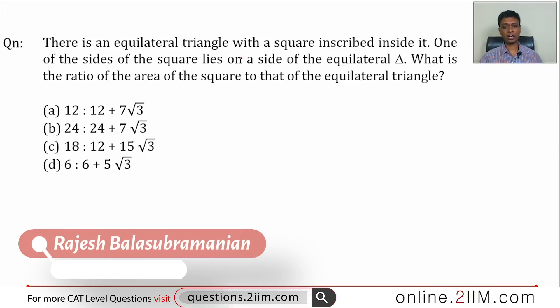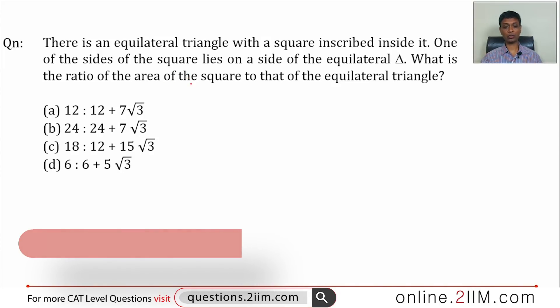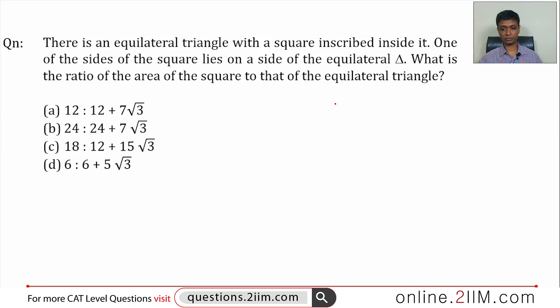There is an equilateral triangle with a square inscribed inside it. One of the sides of the square lies on a side of the equilateral triangle. What is the ratio of the area of the square to that of the equilateral triangle?